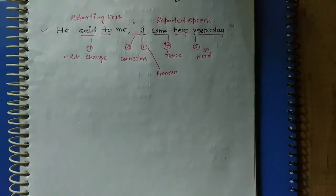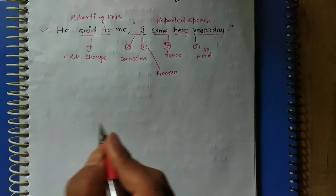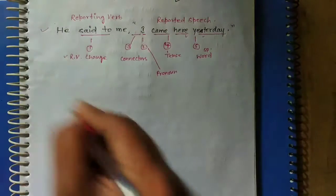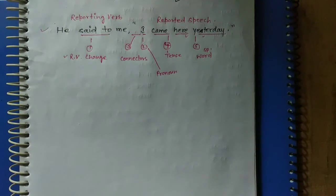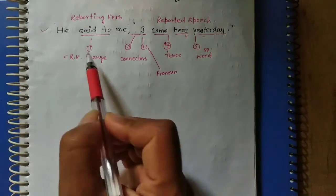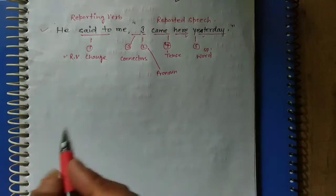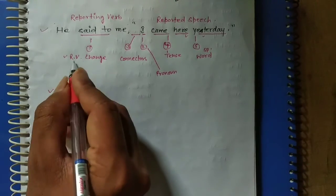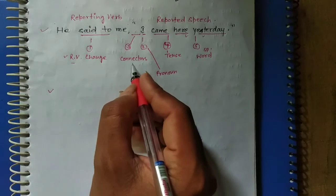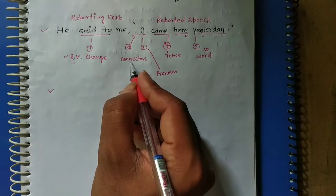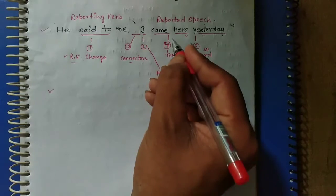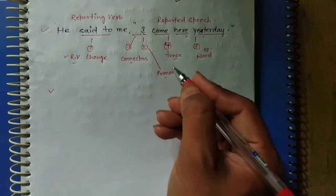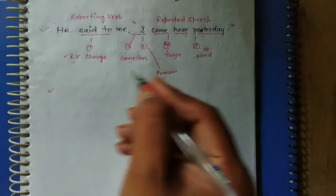For that particular reason we must remember six tables or five tables. The first table will be changes in reporting verb, second table will be about connectors, third will be about pronoun, fourth will be about tenses, and the last one will be about special words.